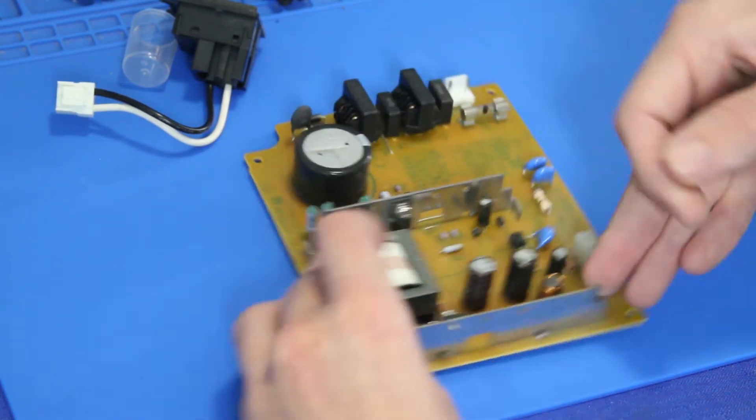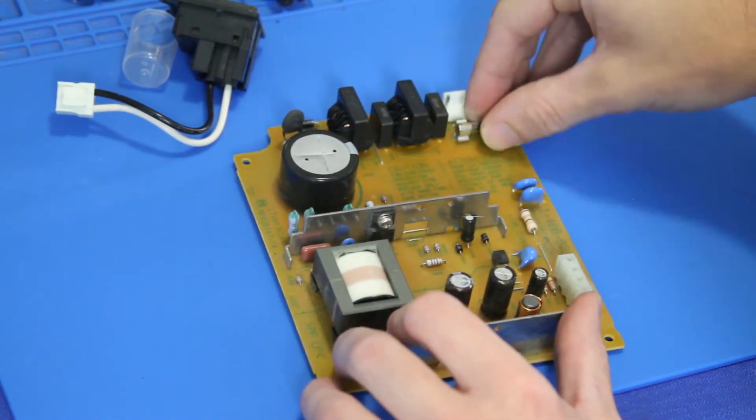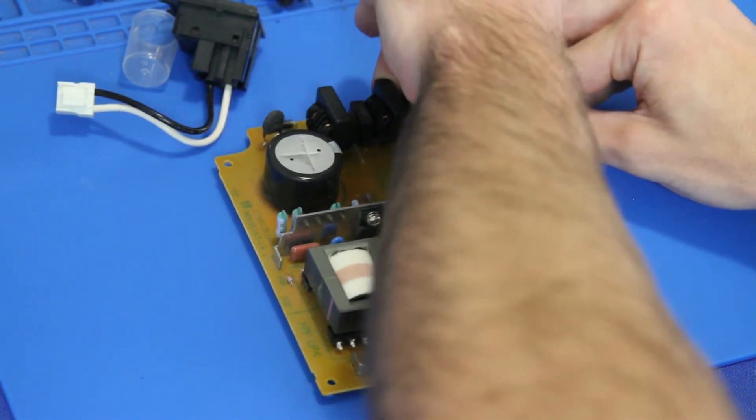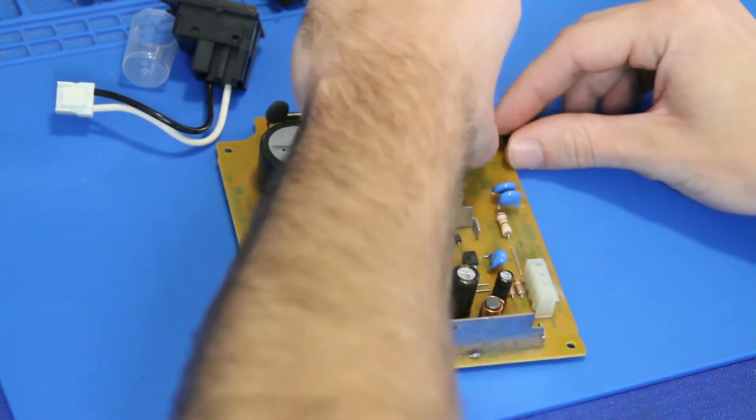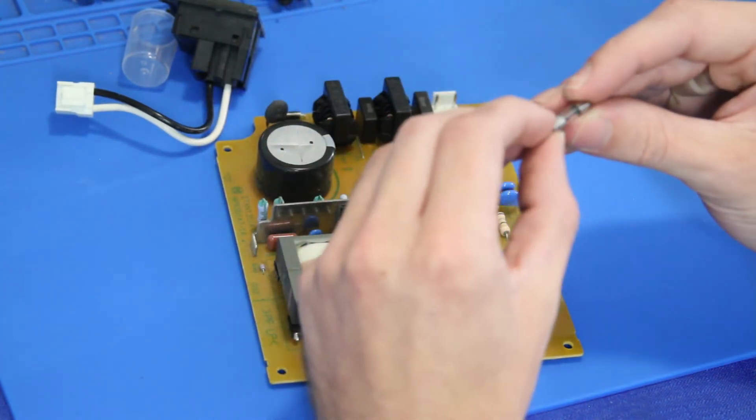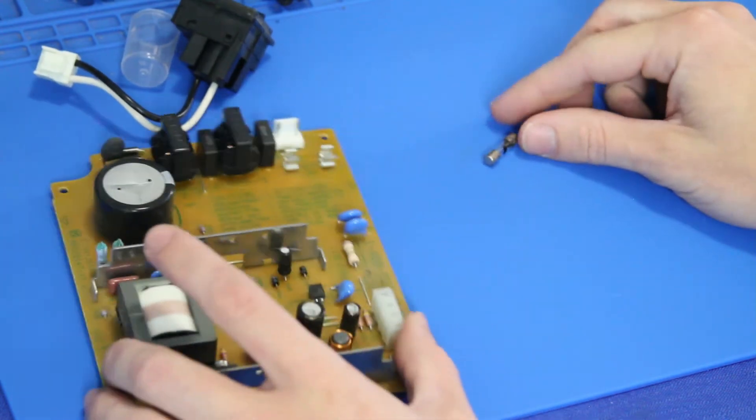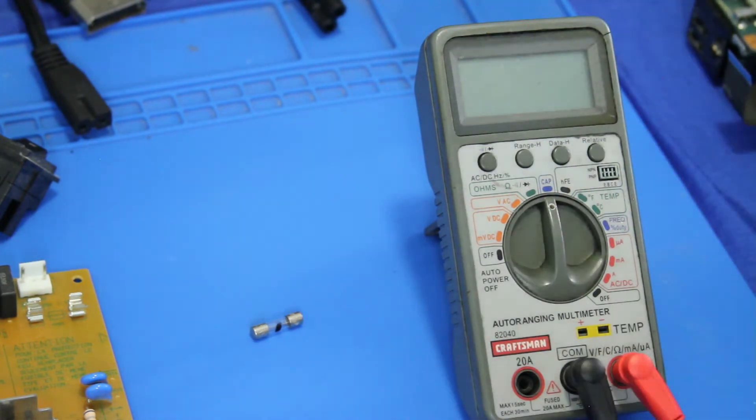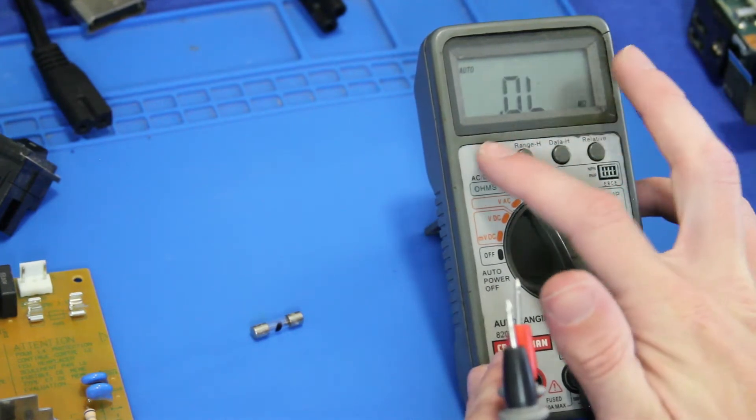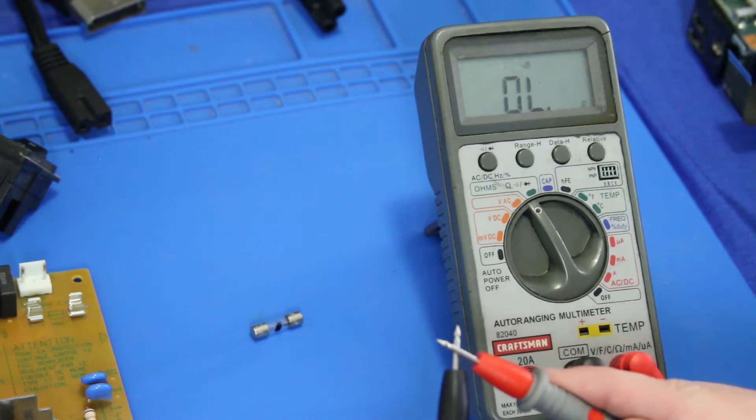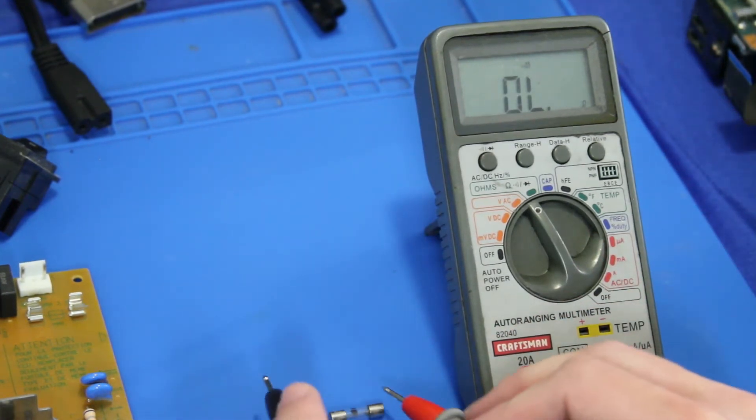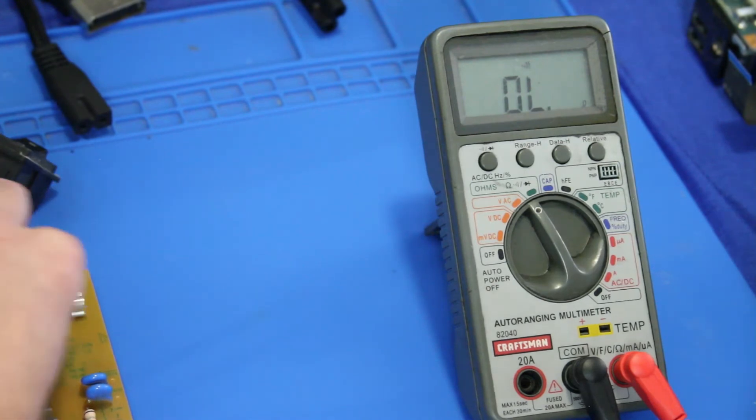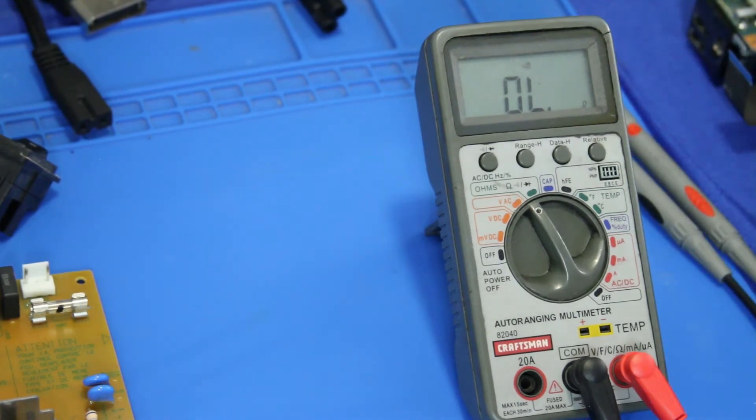Without further ado, how I'm going to test this, the first thing I want to look at is this right here, this is the fuse. Depending on your power supply model, the fuse is removable or it's not removable. This one is but it's being a real pain in the butt and I'm just going to inspect it. It doesn't look blown but I'll show you how to test the fuse. To test the fuse you can do a visual inspection. I'm going to put my multimeter into continuity mode. The fuse is good.